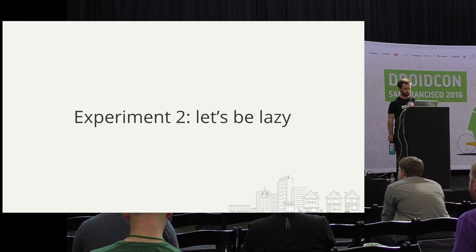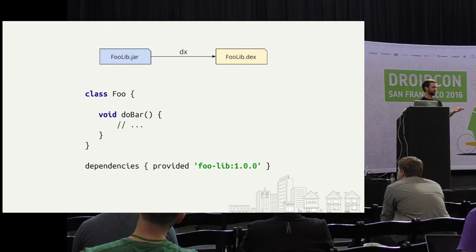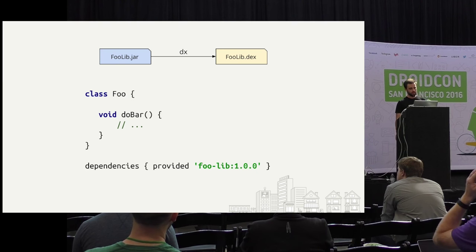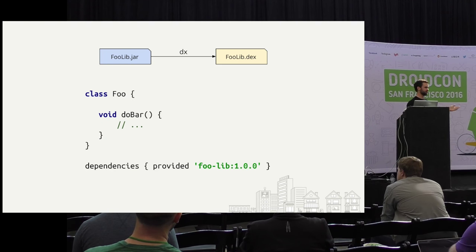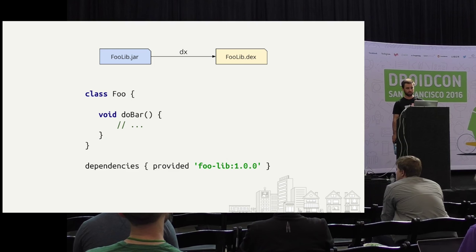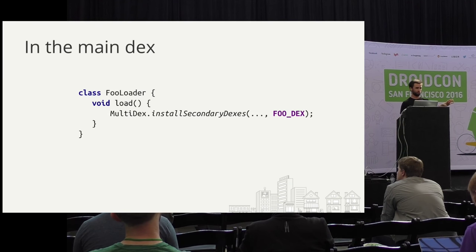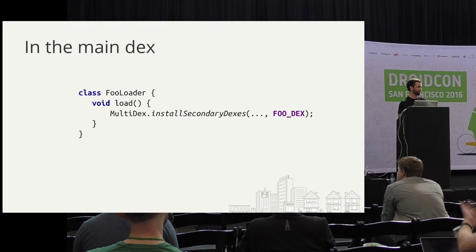Imagine we've got a library — a foo class — with a method doBar. Let's take the library and dex it on our own. You can dex it on your computer with the dx command, which is in the SDK. The way we can use the library in our code without bringing it in is with the 'provided' keyword in Gradle — it usually says 'compile' and we just change it to 'provided.' You can use all the classes and it works. So how can we actually load this additional dex file when running our app? We'll take the additional dex file and put it in assets — ship it, but not in some place that'll get merged in.